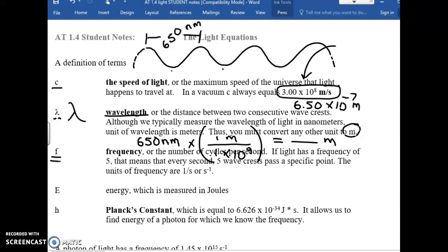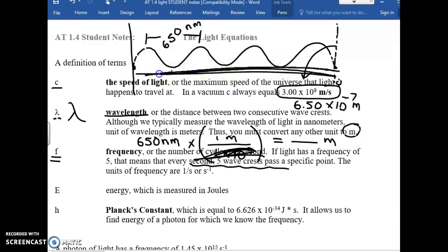We also have a term called frequency, how frequent something happens. We use the term cycles per second. If light has a frequency of five, for example, it means that every second, five wave crests pass a specific point. So for example, if let's say that I start this photon of light at this point, and then in one second, this point winds up over here. In other words, from here to here, can travel past this point in one second, I would say that this photon of light has one, two, three, four, it has a frequency of four cycles per second.